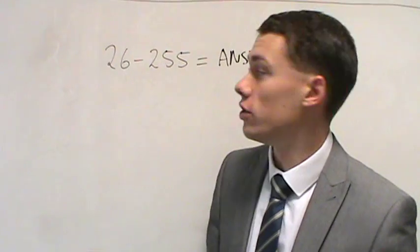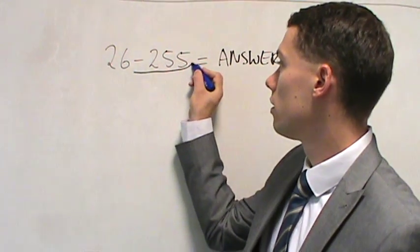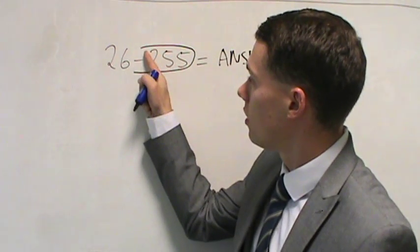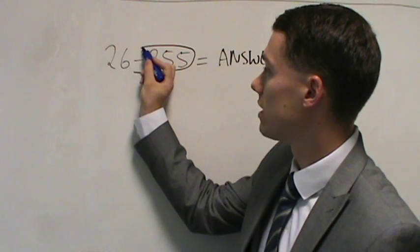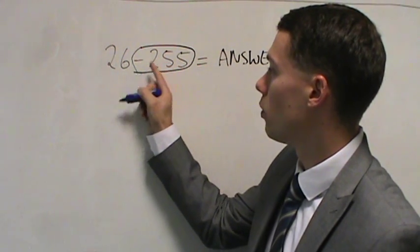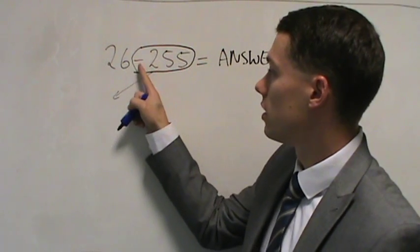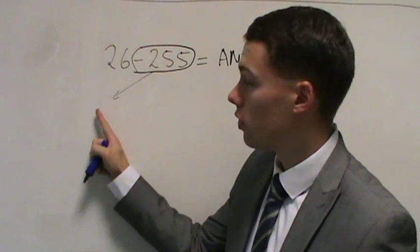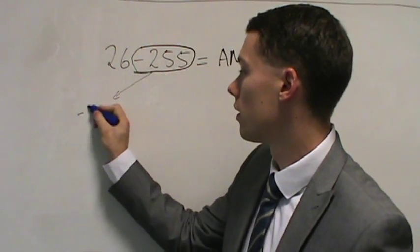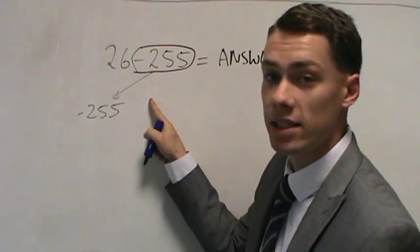It's actually very simple to do this. You just circle this number and make sure you get also the symbol that goes before it. So it could be positive or negative, you get that symbol as well. You circle the second number with its symbol and you put it at the front. So that's negative 255, that's going to go to the front now.